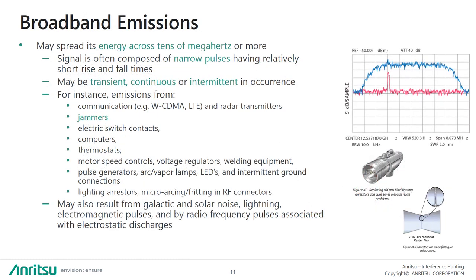Broadband emissions, on the other hand, spread their energy across tens of megahertz or more. Quite often the signal is composed of narrow pulses having relatively short rise and fall times. With intentional emissions, this is the case with various OFDM signals such as Wi-Fi and LTE, where a broadband signal is composed of many sub-carriers, each with a bandwidth in the kilohertz range. Broadband emissions may also be transient, continuous, or intermittent when they are occurring.